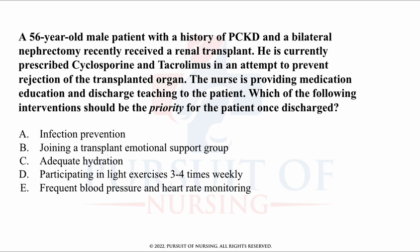This is a classic multiple choice style question and it will test your knowledge of physiological integrity. A 56-year-old male patient with a history of polycystic kidney disease and a bilateral nephrectomy recently received a renal transplant. He is currently prescribed cyclosporine and tacrolimus (Prograf) in an attempt to prevent rejection of the transplanted organ. The nurse is providing medication education and discharge teaching to the patient. Which of the following interventions should be the priority for the patient once discharged?